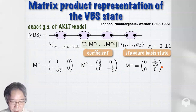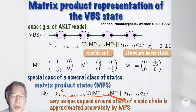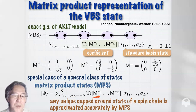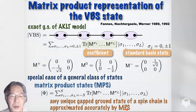This consideration can be generalized. This is a special case of a general class of states called matrix product states, or MPS. In general MPS, for a general spin-S system, M can be any D-by-D matrix. A surprising and amazing fact is that any unique gapped ground state of a quantum spin chain with translation invariance is very accurately approximated by MPS. I will come back to MPS in part two.